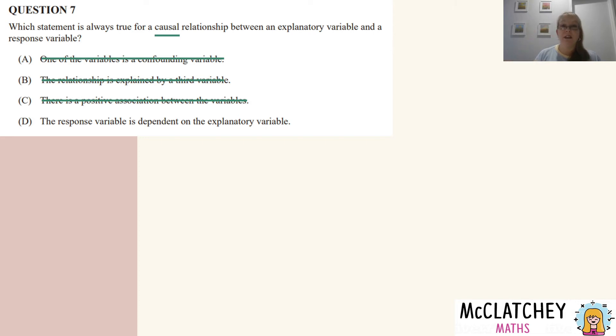The last one is the response variable is dependent on the explanatory variable. And that's what we said at the very beginning. That's what a causal relationship is. The explanatory variable is causing or having an effect on the response variable, which means it's dependent on the other one, which means that's our answer, D.